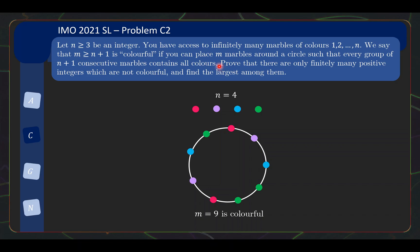Okay, what is the question? The question is to prove that there are only finitely many positive integers which are not colorful and find the largest not colorful integer. Okay, just something quick to keep in mind as we go along, which is that if you have n plus 1 marbles containing all n colors, then it must be the case that there's exactly one color that appears twice in that block. And all the other colors appears only exactly once in that block. Okay, just something useful to keep in mind as we go along.